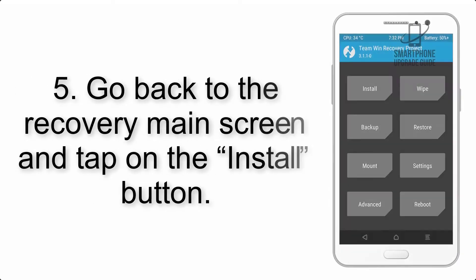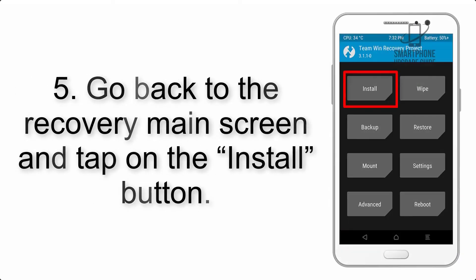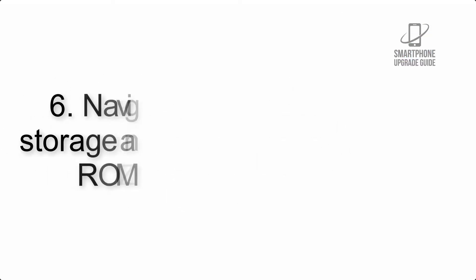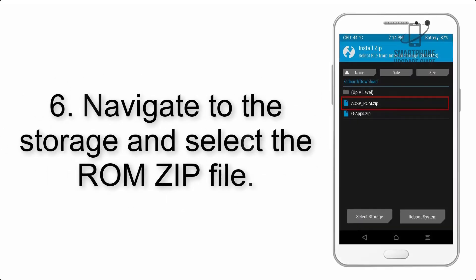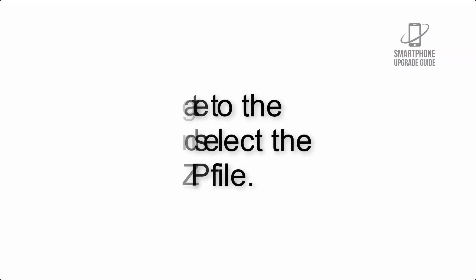Step 5: Go back to the Recovery main screen and tap on the Install button. Step 6: Navigate to the Storage and select the ROM zip file.